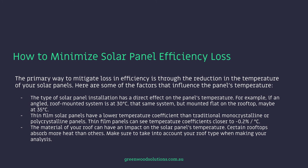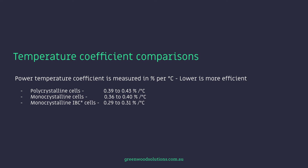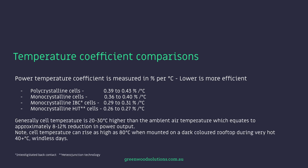The material of your roof can have an impact on the solar panel's temperature, as certain rooftops absorb more heat than others. Power temperature coefficient is measured in percentage per degree C — lower is more efficient. For instance: polycrystalline cells 0.39–0.43%, monocrystalline 0.36–0.40%, monocrystalline IBC cells 0.29–0.31%, and monocrystalline HJT cells 0.26–0.27%. Generally cell temperature is 20 to 30 degrees higher than ambient air temperature, equating to approximately an 8 to 12% reduction in power output. Note that cell temperatures can rise as high as 80°C when mounted on a dark coloured rooftop during very hot 40-degree windless days.